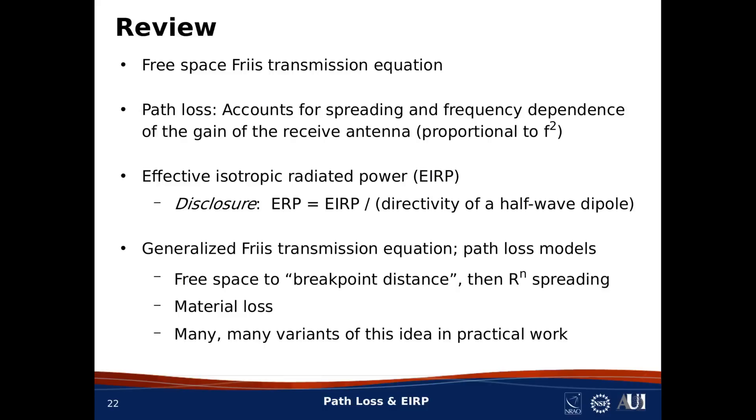Finally, we generalized all of this to propagation conditions which are different from free space. And this was easy to do because all we have to do is modify the form of the path loss factor in the Friis equation. As an example, I showed you the common model in which path loss is modeled as free space up to a breakpoint distance, and then as having a modified spreading factor or a different path loss exponent, as we say, beyond that distance. I also showed you how to account for material loss, which is a problem that shows up in terrestrial 60 gigahertz propagation problems. And, again, there are many variants of all of this, including path loss models that have multiple breakpoint distances, combinations of spreading loss exponents of material losses, and so on.